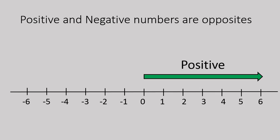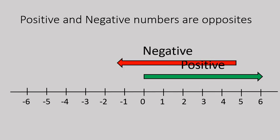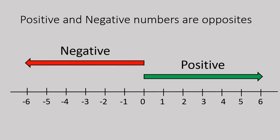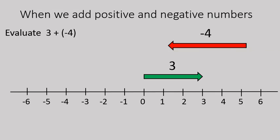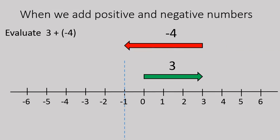Remember, positive numbers on a number line would move from zero to the right, and negative numbers would move from zero to the left. So on a visual scale, this is what it looks like when we add positive and negative numbers. Just a quick recap: positive three plus negative four gives us negative one.